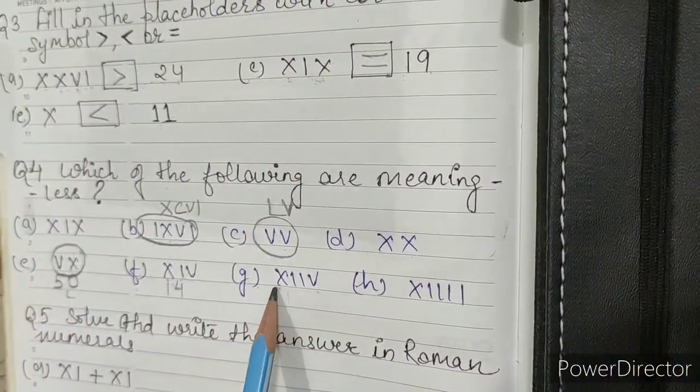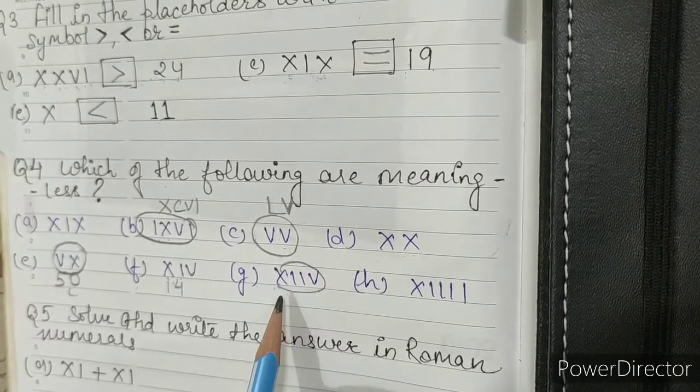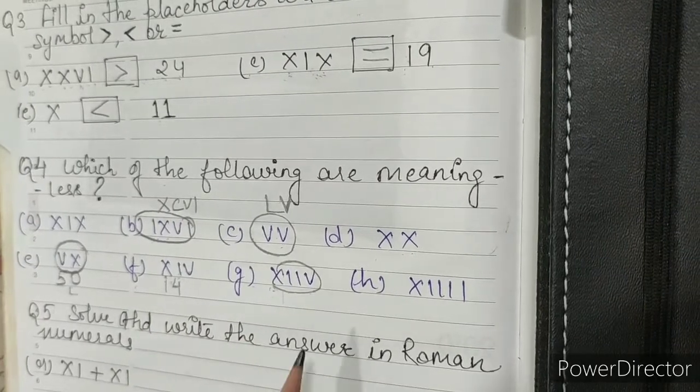Part G: XIIV. It doesn't exist. It is meaningless. If we want to write 14, it will be written as XIV. So this is meaningless.